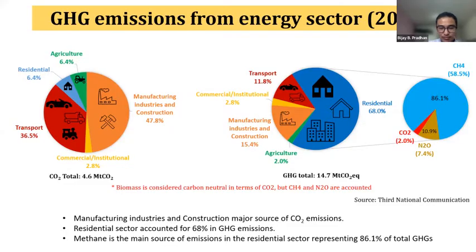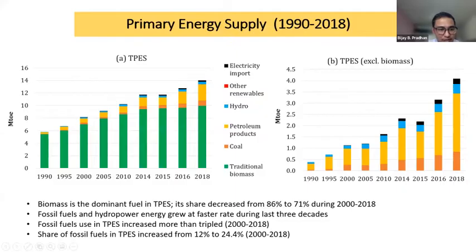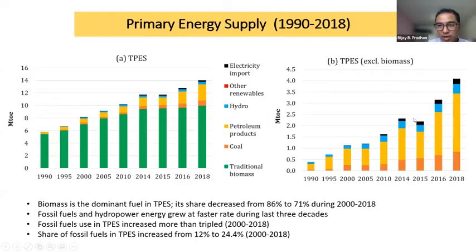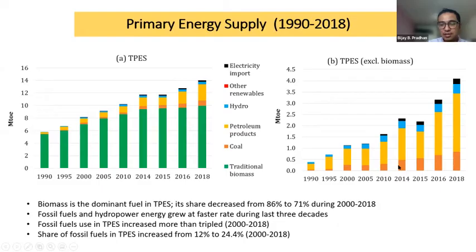The methane emission is coming from the residential sector, and the next slides will clarify this. The graph here shows total primary energy supply during 1990 to 2018. The share of biomass is still 71% in 2018. If you look at the graph on the right, which excludes biomass, the use of hydro and fossil fuels has been increasing. The concern is that the rate at which fossil fuels are increasing is rapid, and it is also contributing to GHG emissions.